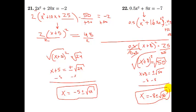I know I went pretty fast on that last example, so feel free to pause it and copy stuff down and check your steps. The moral of the story for this section is twofold: take half the middle number and square it — that's the number you need to finish your perfect square. Once you have your perfect square, rewrite it from a trinomial as a binomial, then work backwards to solve for x. If you're having any trouble with that part, review section 8.9.